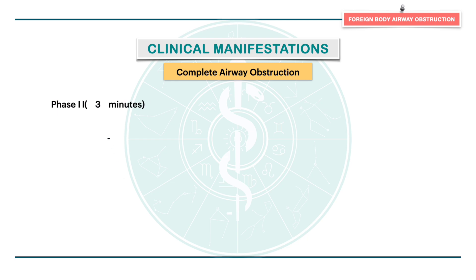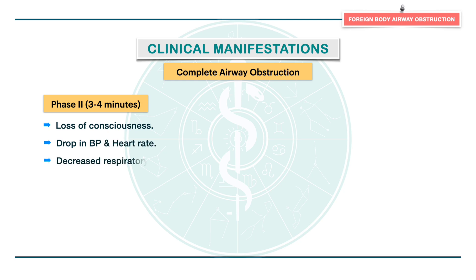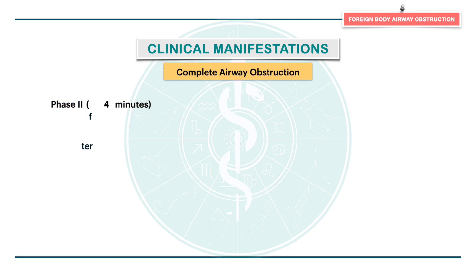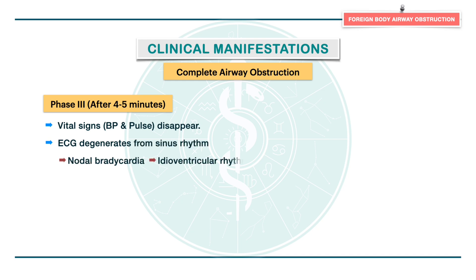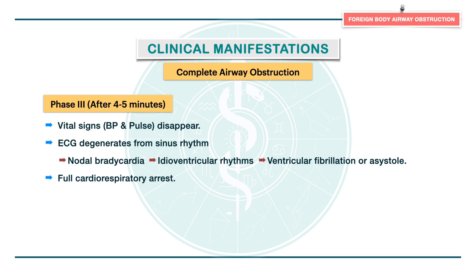In the second phase, the patient loses consciousness with a drop in blood pressure and heart rate. There is decrease in respiratory efforts and further deterioration in blood gases. The third phase starts after four to five minutes, wherein vital signs such as blood pressure and pulse disappear. ECG degenerates from sinus to nodal bradycardia, then to idioventricular rhythms, and finally terminates in ventricular fibrillation or asystole and full cardiorespiratory arrest.